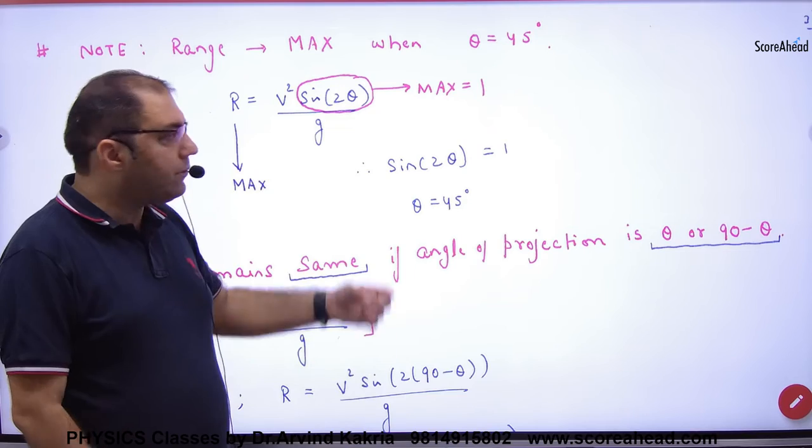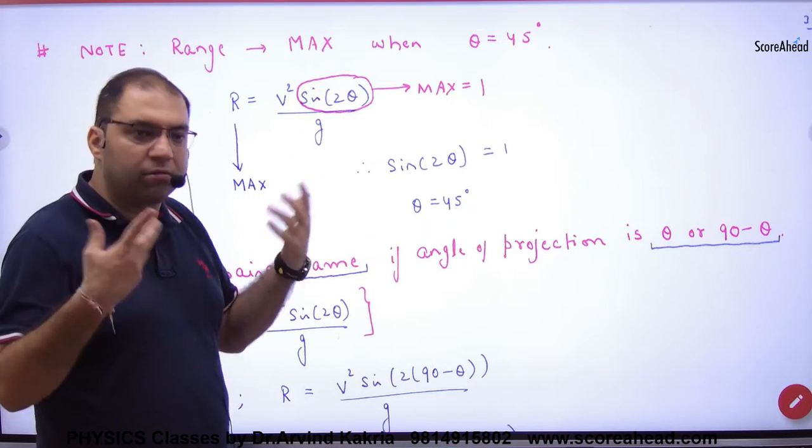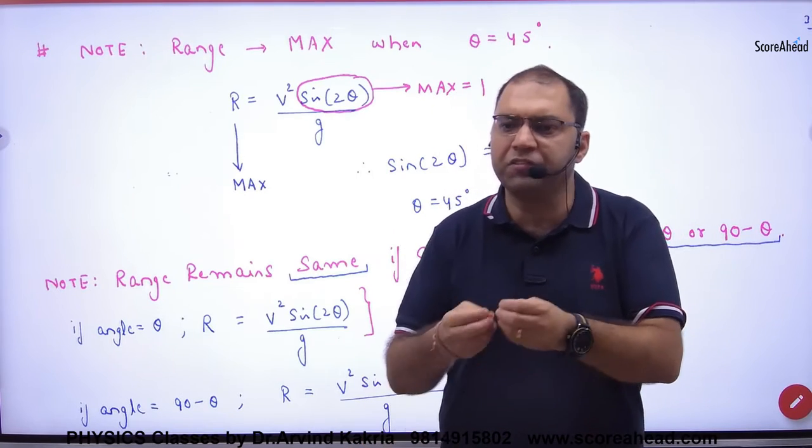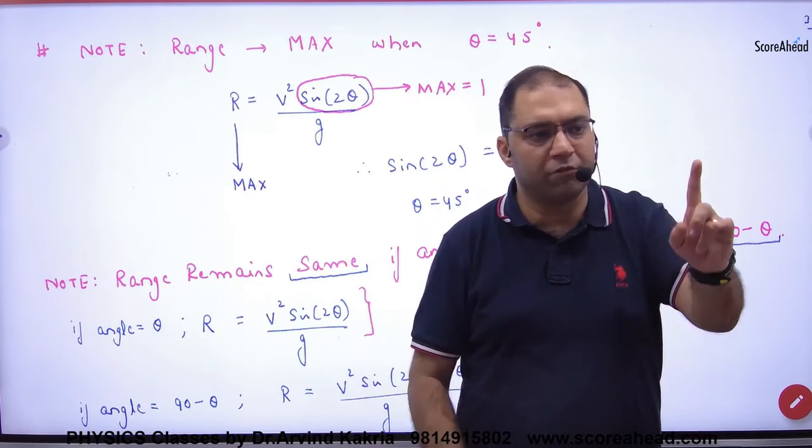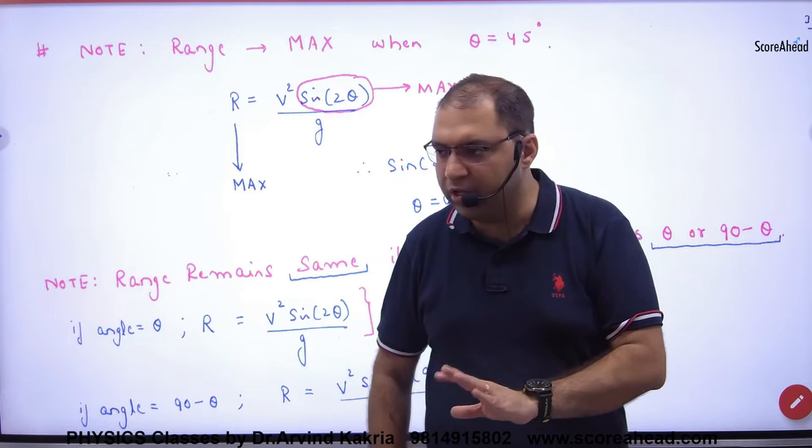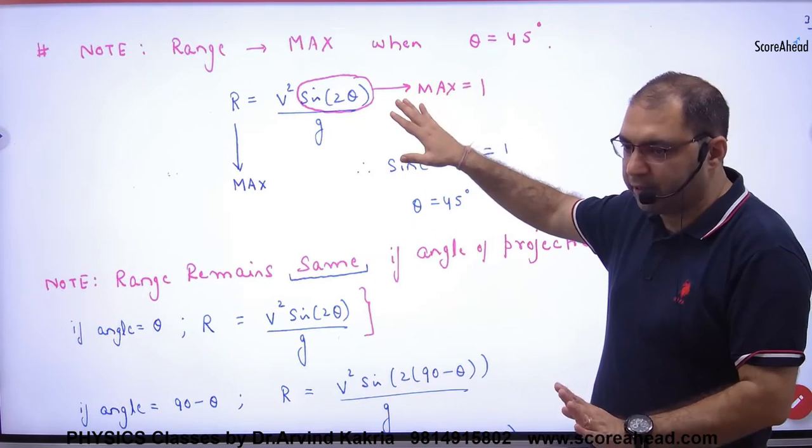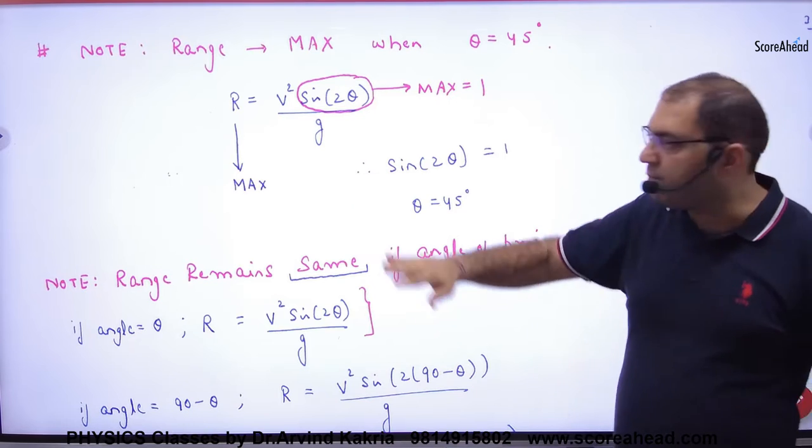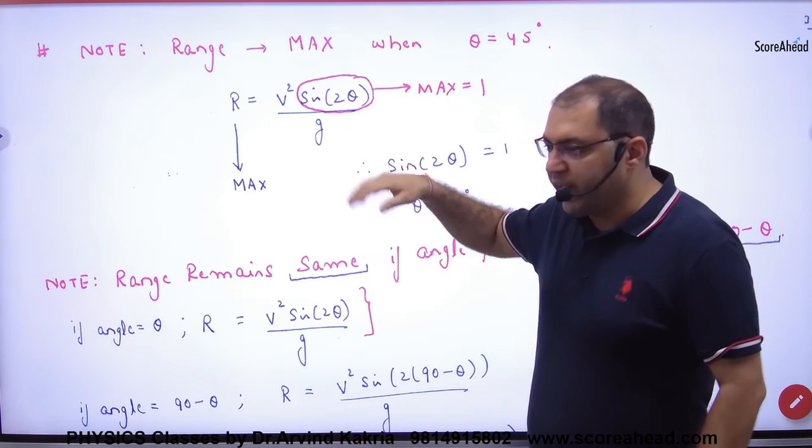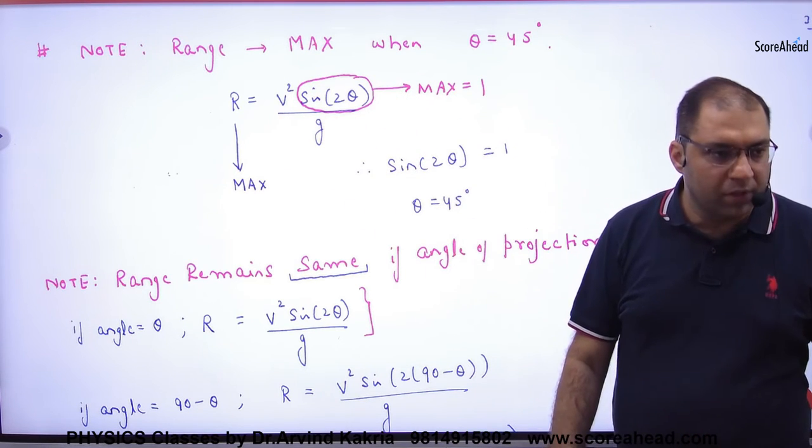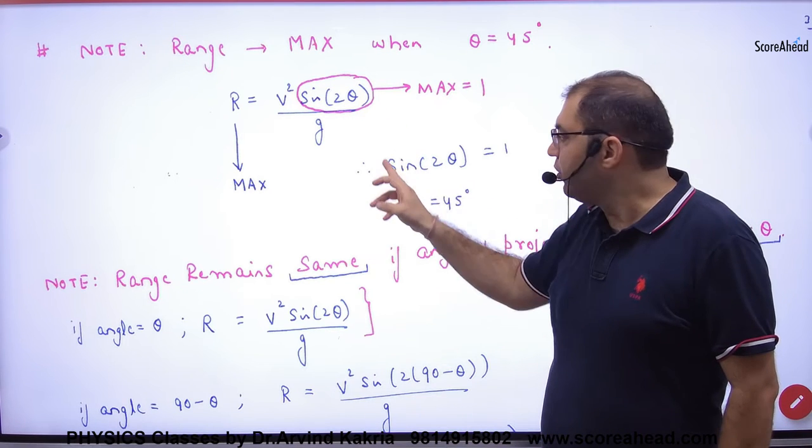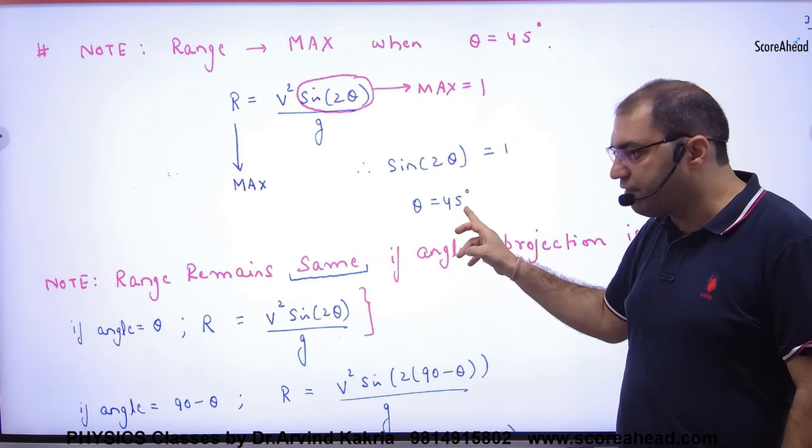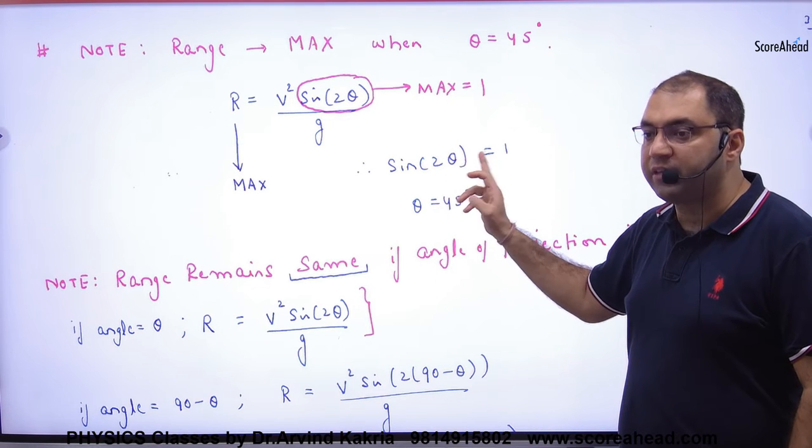such that sin(2θ) is maximum. The maximum value of sin(2θ) is one. That means this value can reach one, so if I put one, then range will automatically be maximum. And when will one come? What will the angle θ be? 45 degrees, because sin(90) will be one. So θ equals 45, then 2 times 45 is 90, and sin(90) is 1. So this is the standard rule: if you have a projectile and want maximum ground coverage,